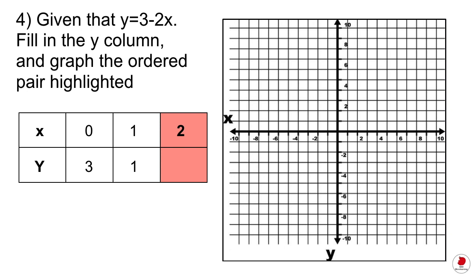This next problem is a hotspot problem, which asks you to interact with the image. You might have to plot a coordinate on a graph. It's a two-step process: on one side you have a function you have to solve, and then you plot that answer on the graph. The question says: given that y equals 3 minus 2x, fill in the y column and graph the ordered pair highlighted.